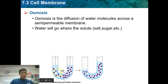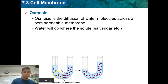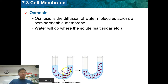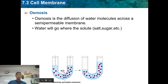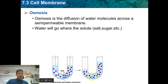Here's an example using a U-tube — a U-shaped tube. We have a lot of salt on the right and not a lot of salt on the left. Remember, water is going to go where the salt is. Since there's a lot of salt on the right, the water is going to make its way across this membrane and into the right side of the U-tube.